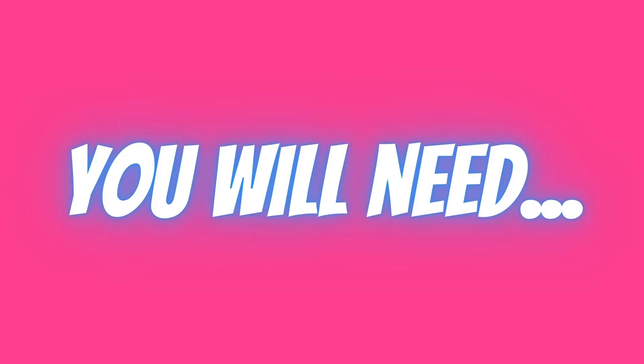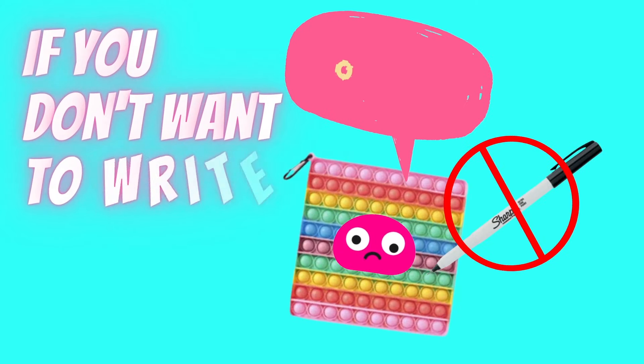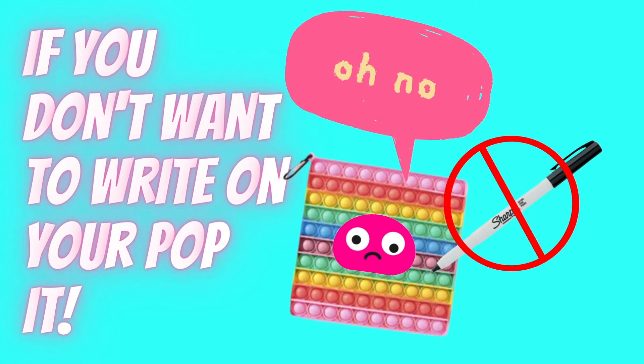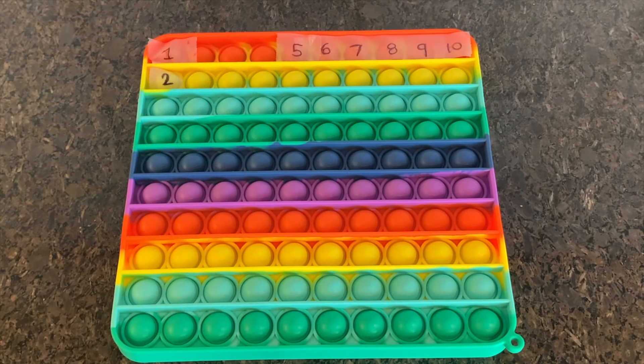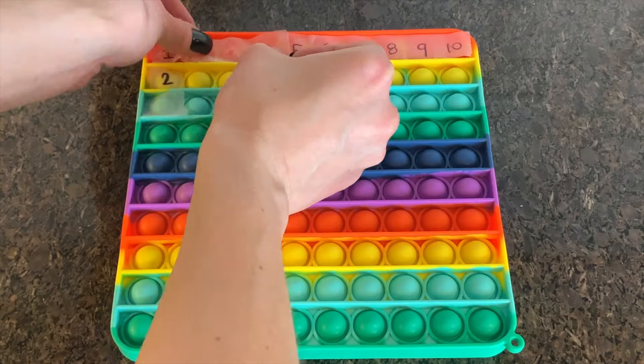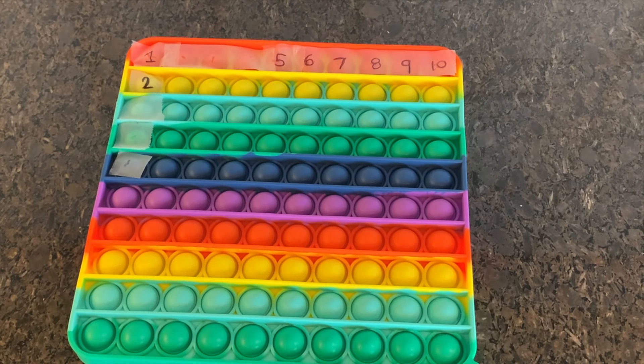To do so, you will need a 100-piece poppet and a Sharpie or permanent marker if you would like to write on the poppet. If you do not want to write on your poppet, you can put tape or round garage sale stickers on the poppet and then write with the Sharpie.